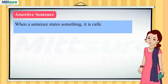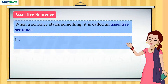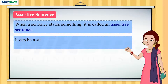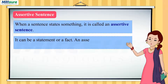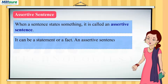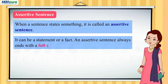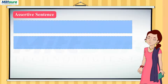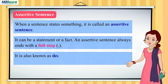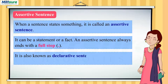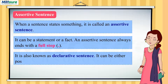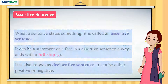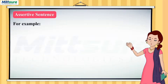Assertive sentence: when a sentence states something, it is called an assertive sentence. It can be a statement or a fact. An assertive sentence always ends with a full stop. It is also known as a declarative sentence. It can be either positive or negative.